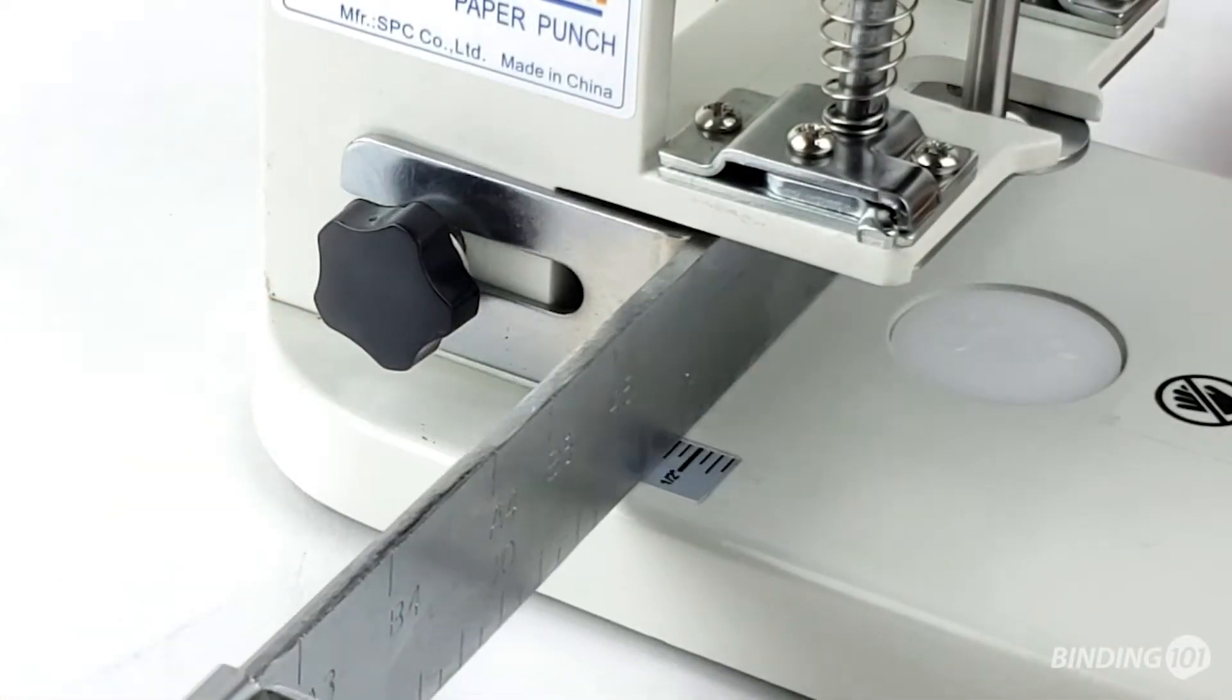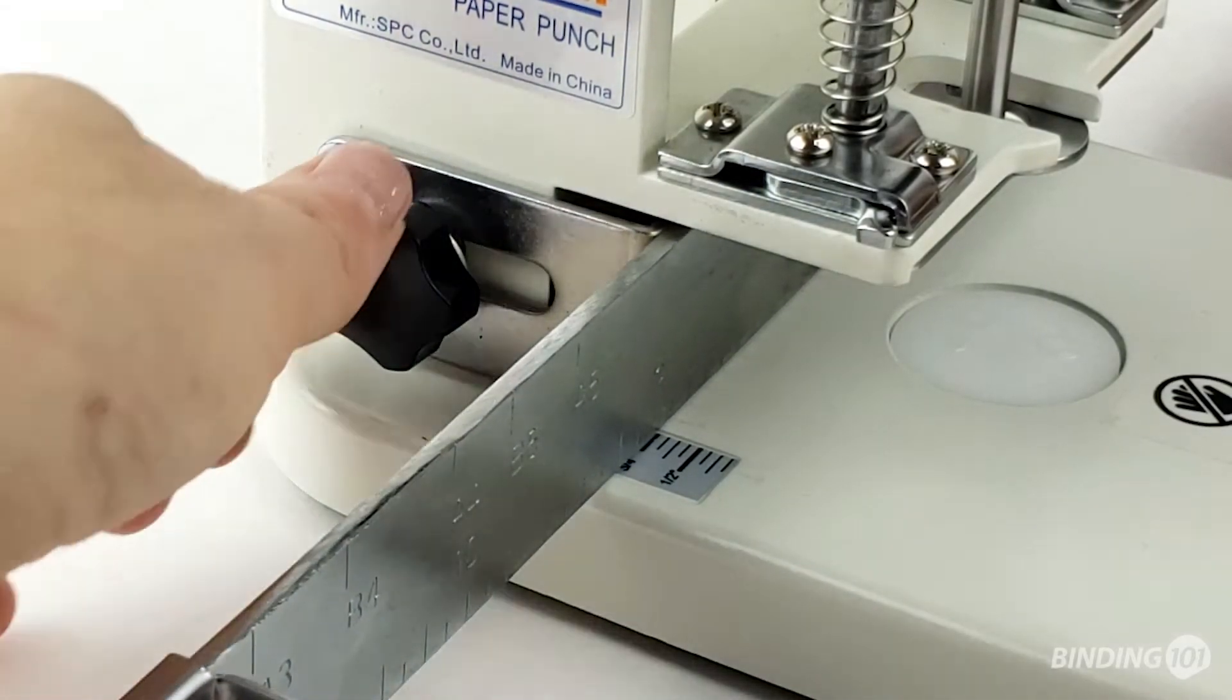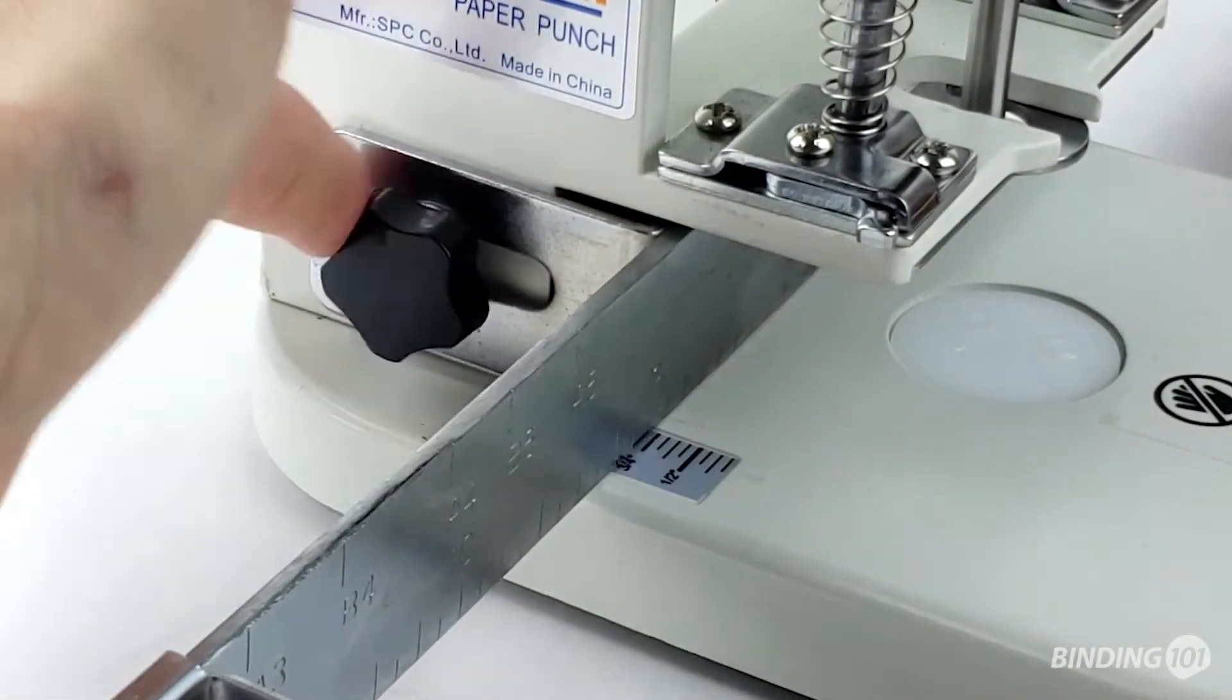Set the hole depth you want by sliding it forward or back using the paper guide on the top of the machine. Once set to your hole depth, tighten the knobs to hold it in place.